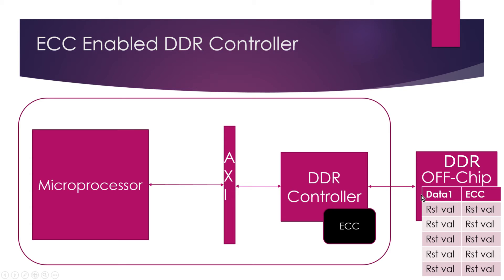So when the DDR controller reads those locations, it will read the reset value which is usually all zeros, and the ECC will not be aligned with the data value. The DDR controller will see this scenario as an unrecoverable error and will throw a memory read error.